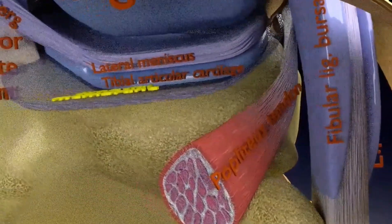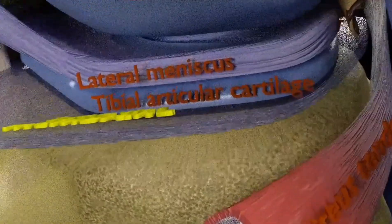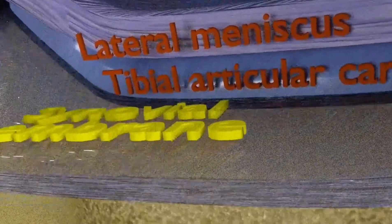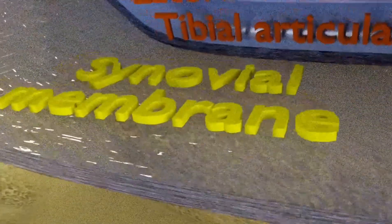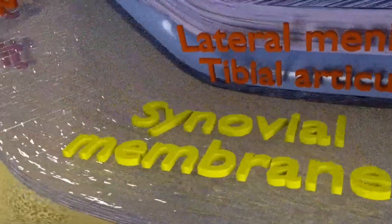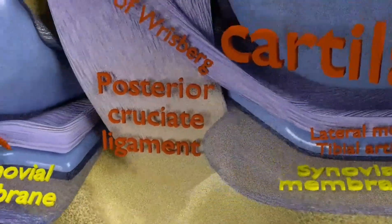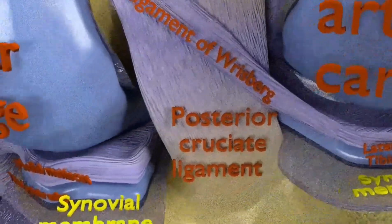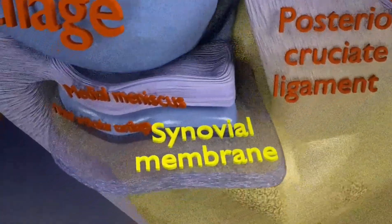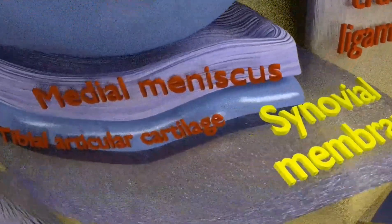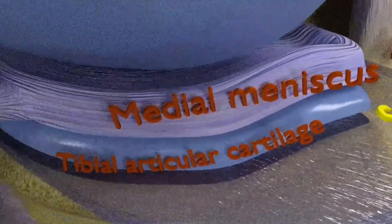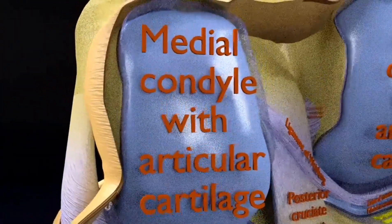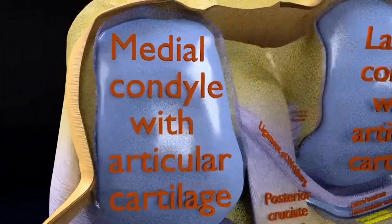Menisci: the medial and lateral menisci are fibrocartilage structures in the knee that serve two functions — to deepen the articular surface of the tibia, thus increasing the stability of the joint, and to act as shock absorbers by increasing surface area to dissipate forces. They are C-shaped and attached at both ends to the intercondylar area of the tibia.